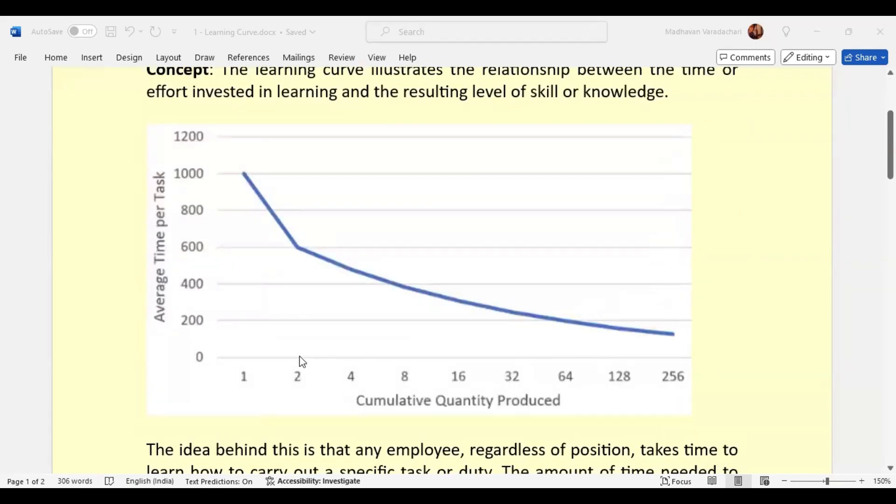This will be the graph. You may notice that when the quantity produced is less, it takes more time, and when it gets doubled, it drastically reduces. So every time it is doubling, the learning becomes much more efficient and the time becomes faster.